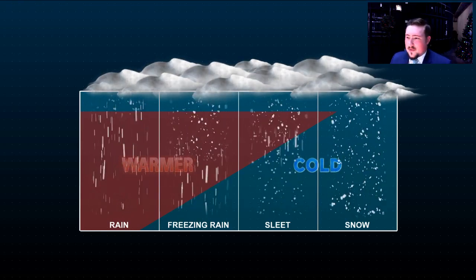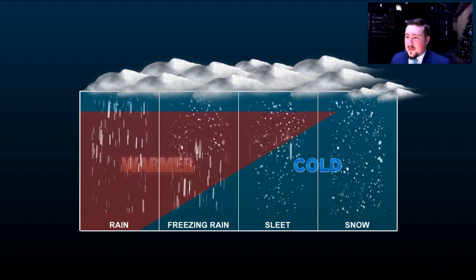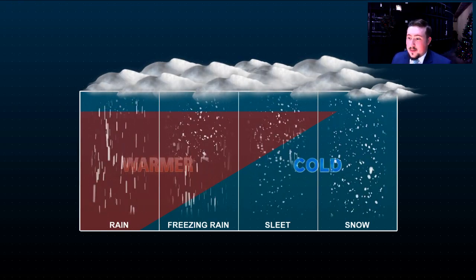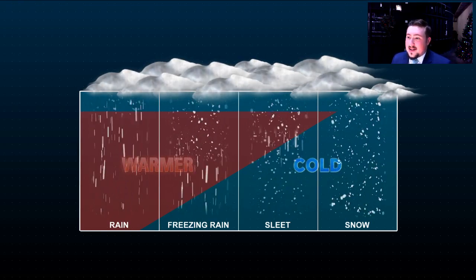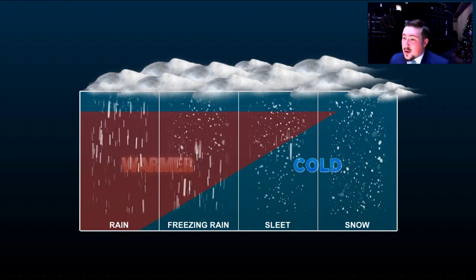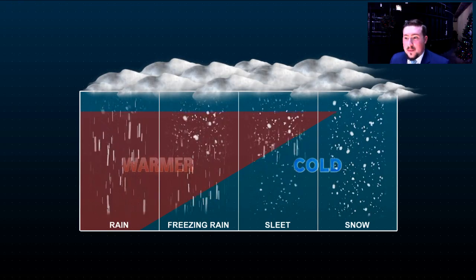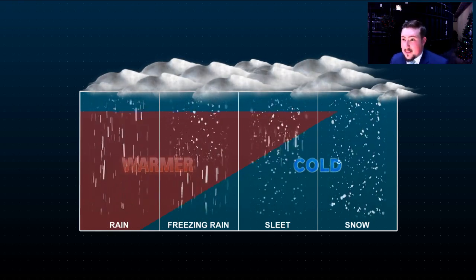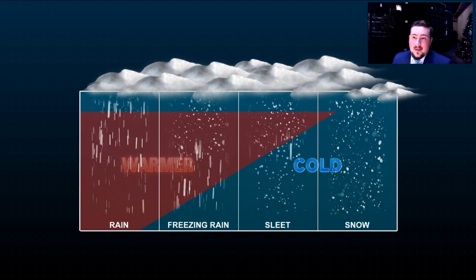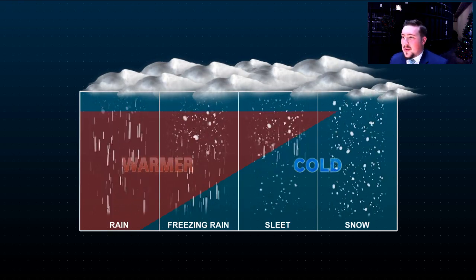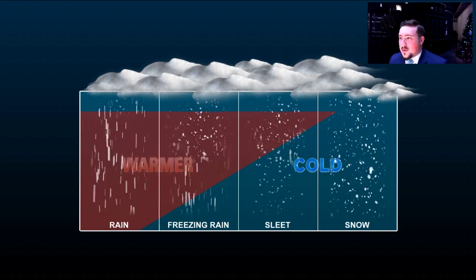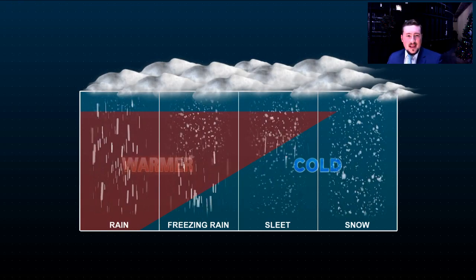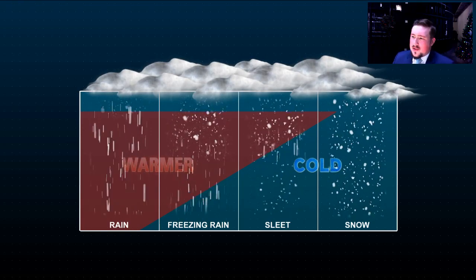You can see the differences between sleet and freezing rain, where there is some cool air but it's not cool enough for long enough to freeze — it'll just freeze whenever it hits something. Rain is obviously very warm all the way to the ground. Then snow, where there's not enough warm air at all, and it stays as those fluffy light little snowflakes.